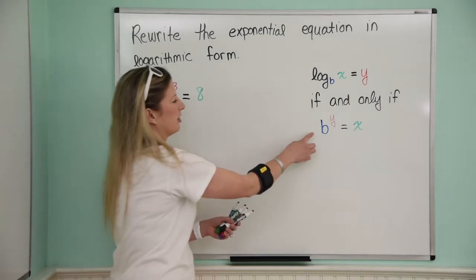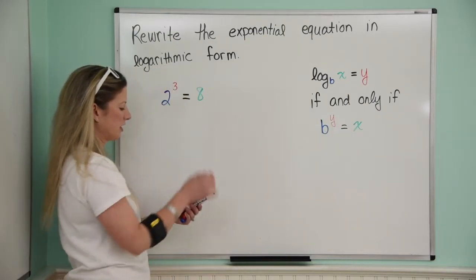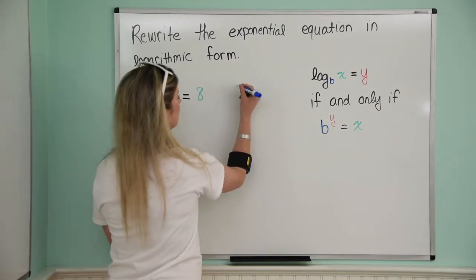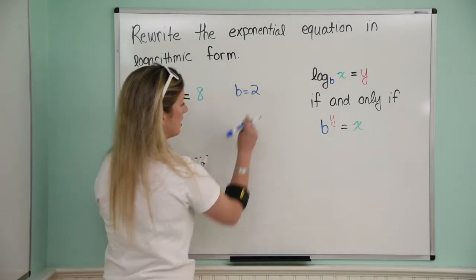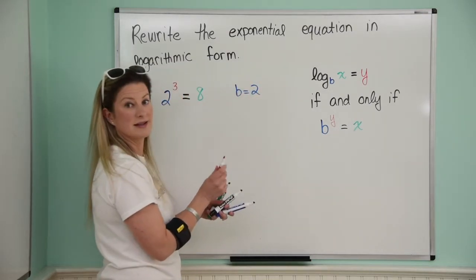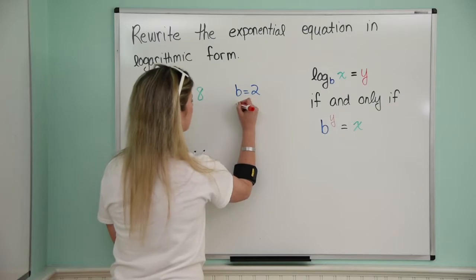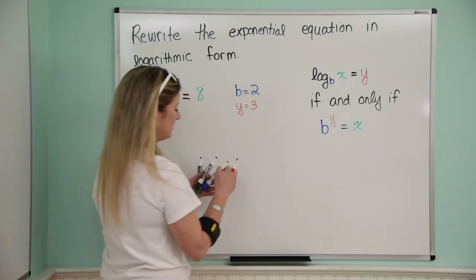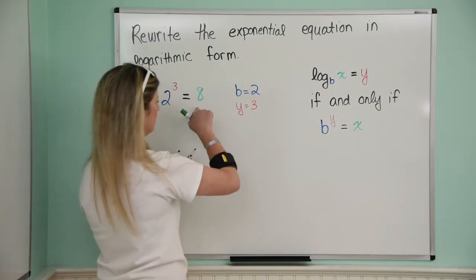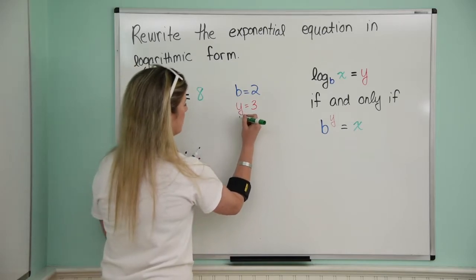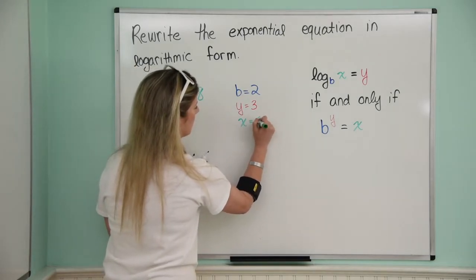So let's identify what our b or y and our x are, so if we come over here, well, b is 2, and y is, very good, 3, and x is 8. Awesome.